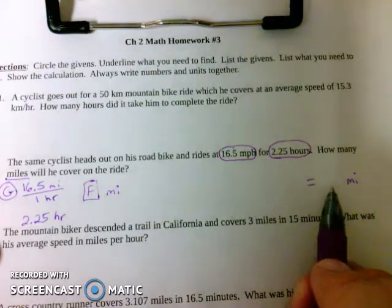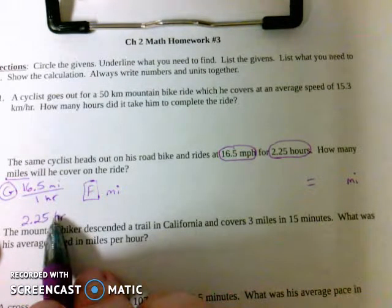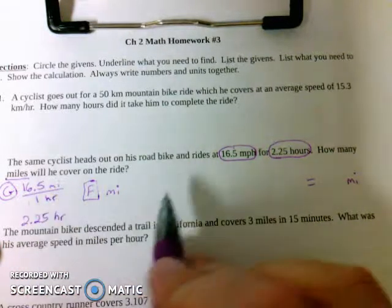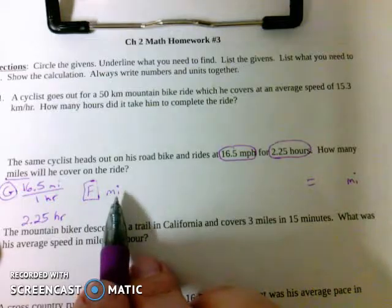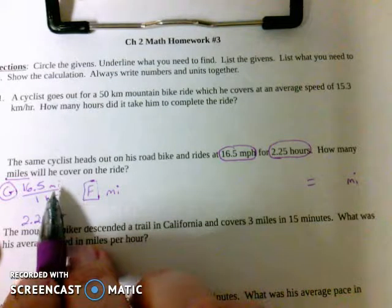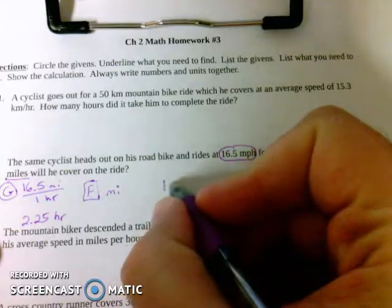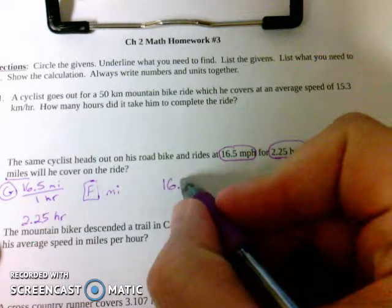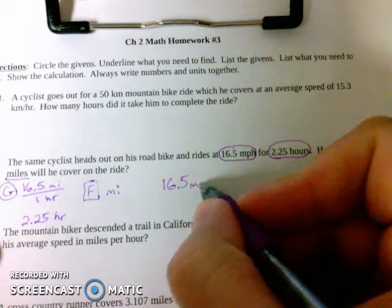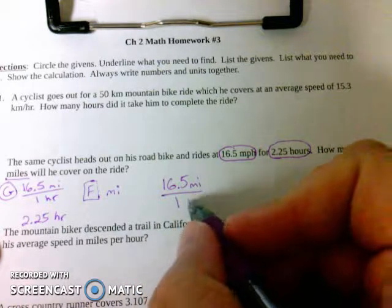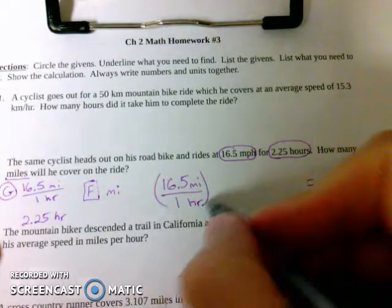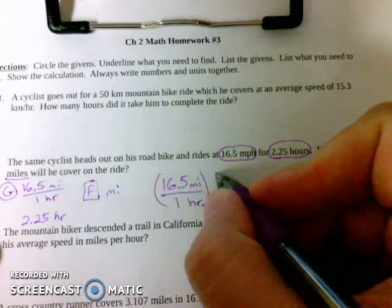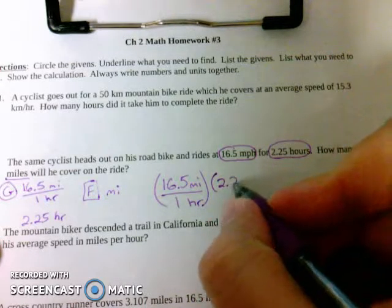And we want to solve for miles. That's what we're trying to find over here. So we're going to write equal sign, blank space, miles. So always start by writing this first. Then, the second thing you do is you find which given has what you're looking for in it. If I'm trying to find miles, I'll start with the thing that has miles in it. When you want miles by itself, that has to start out on the top. It's a complex unit. Make sure if it's something over something else, make sure you put it on top. So 16.5 miles in one hour.